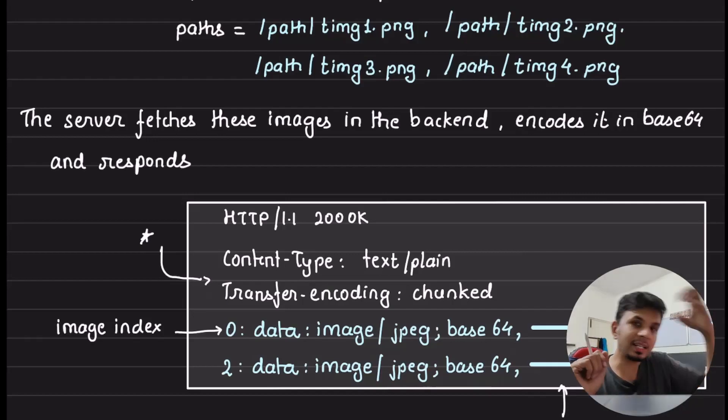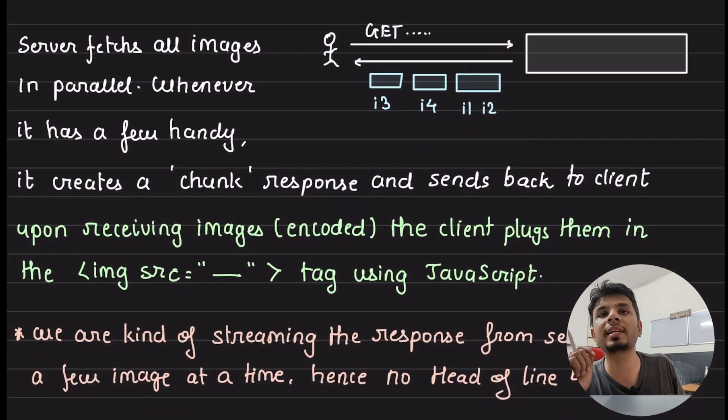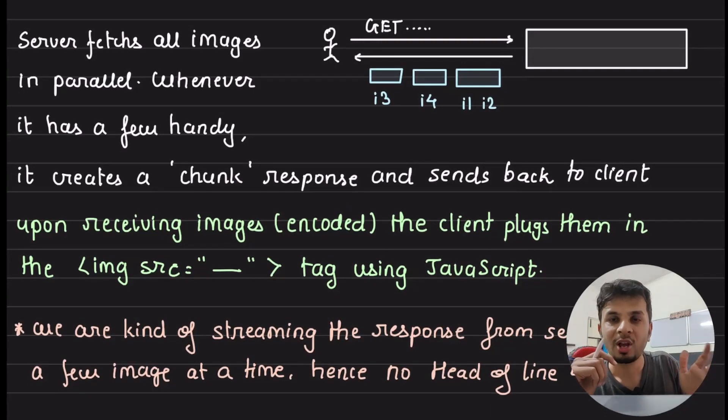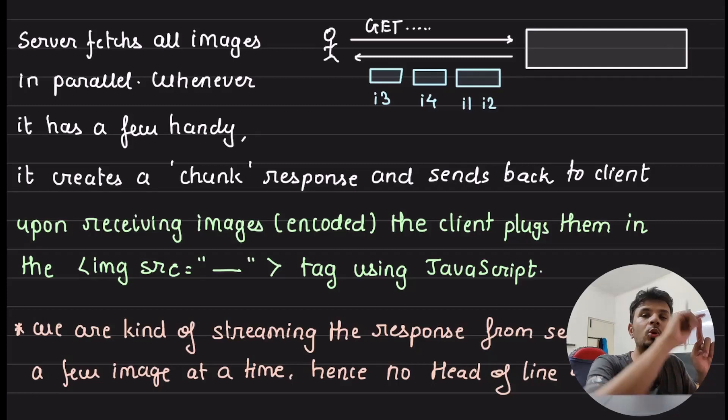So, when your client receives a chunk, when a client receives a partial HTTP response, what your client would do, it would know that, hey, for this index, this is the one. So, it would go to that corresponding IMG tag. In that SRC attribute of it, it would literally replace it.